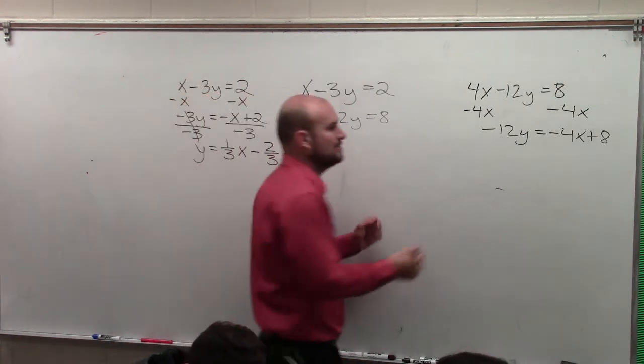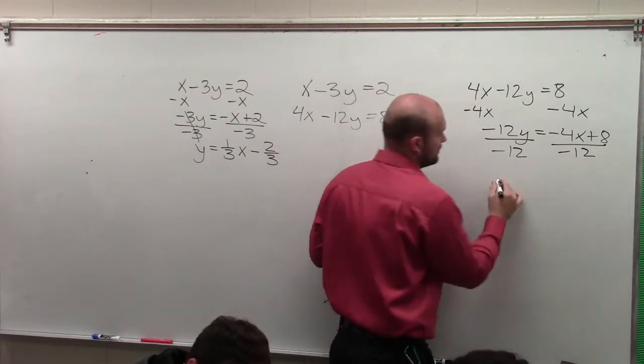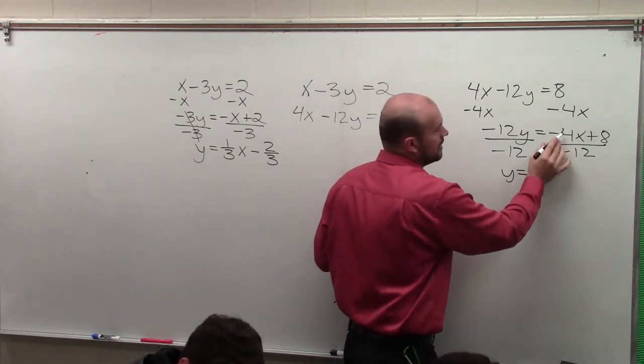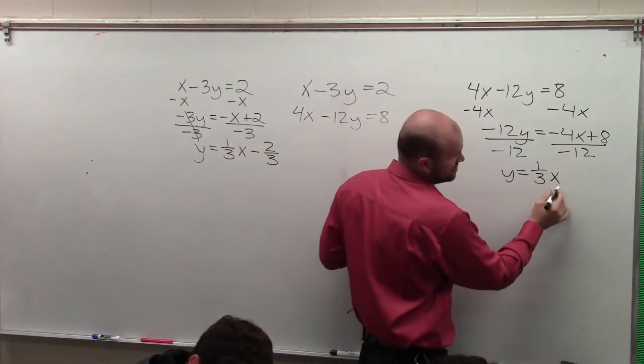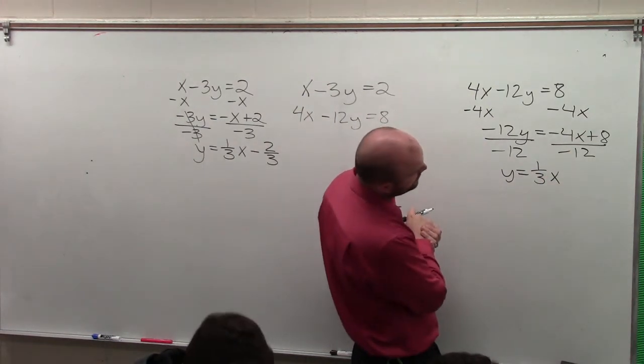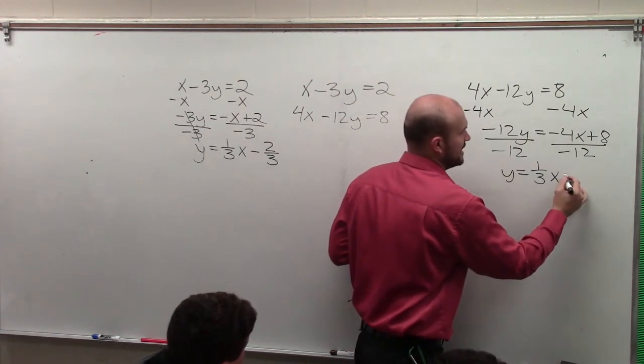Divide by negative 12, divide by negative 12. And I get y is equal to - this becomes a positive 1 third x. And then this is going to be 8 over 12, so 4, so it'd be 2 thirds, negative 2 thirds, right?